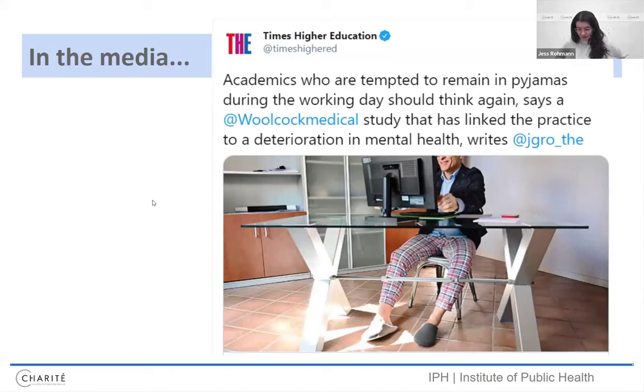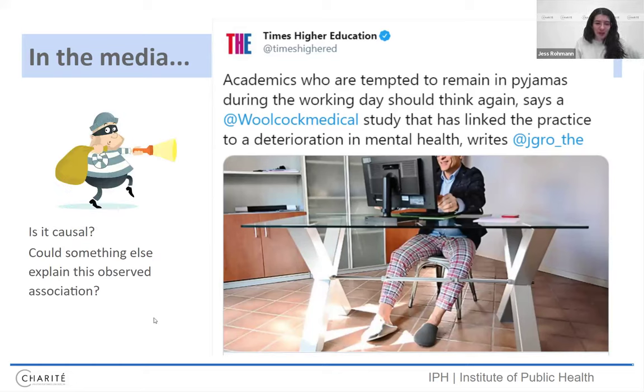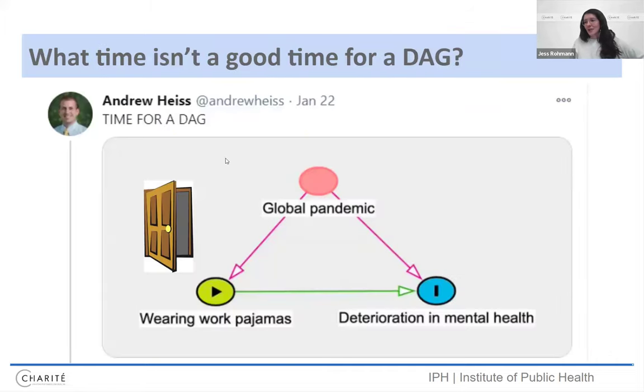Okay. So kind of an abstract thing with all of these letters, but where do we go and we want to get our information? Twitter, of course, the good old X. So here's a nice post from the times higher education saying that academics who are tempted to remain in pajamas during the working day should think again, says a medical study that linked the practice to a deterioration in mental health. And so what do we think is this causal or lurking? Could something else explain this observed association? And yeah, there was this nice response. This was the middle of the pandemic. Andrew Heiss here on Twitter said it's time for a dag back in the good old Twitter days. And indeed there is a common cause of these two variables, right? It's if the exposure is wearing work pajamas and the outcome is deterioration and mental health. What affects those things, the global pandemic. And maybe if there wasn't this global pandemic, we wouldn't see actually anything here at all.